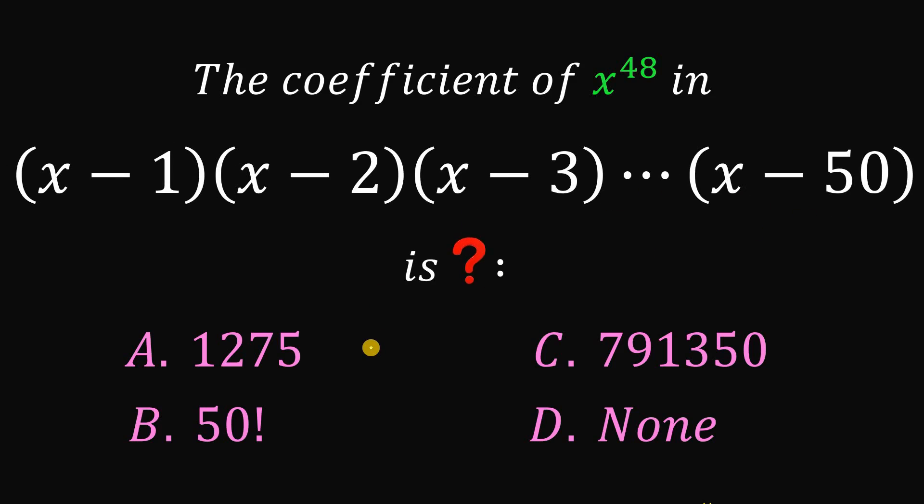Is it letter A, 1,275, B, 50 factorial, C, 791,350, or D, none of the above?